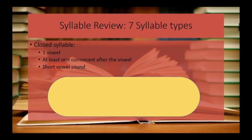The first syllable type is a closed syllable. A closed syllable has one vowel, at least one consonant after the vowel, and it has a short vowel sound. An example would be a word like mat. In the word mat, we have the short A sound and we mark it as closed.